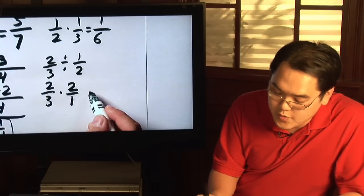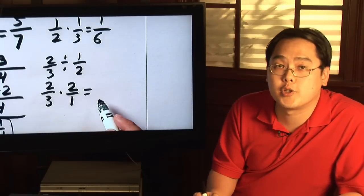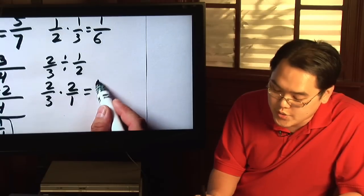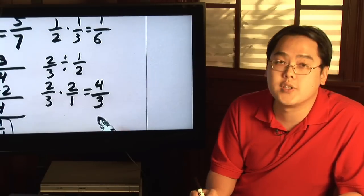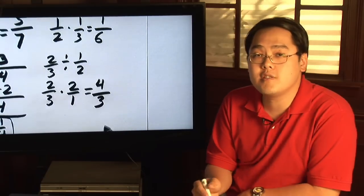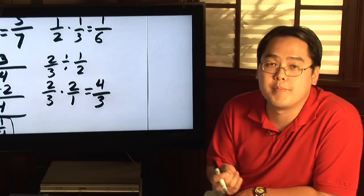So two thirds times two over one, and then you treat it like a multiplication problem. Two times two is four, three times one is three. So division, almost as simple as multiplication, but with one adjustment.